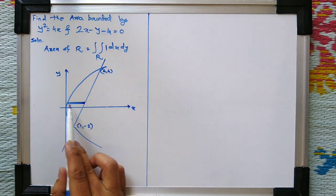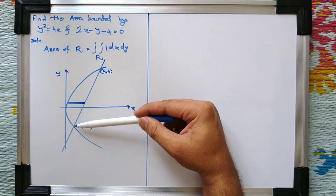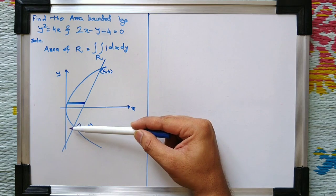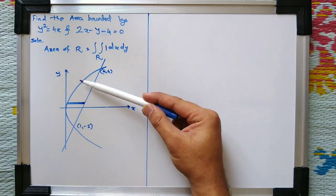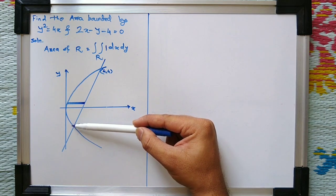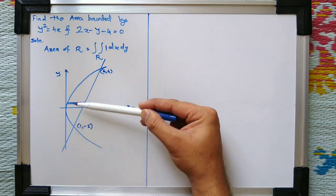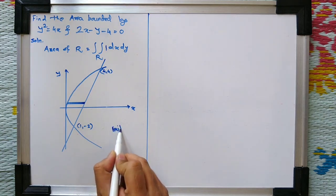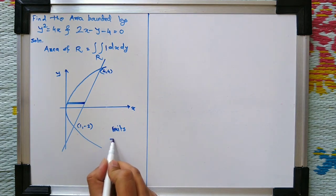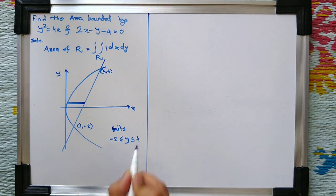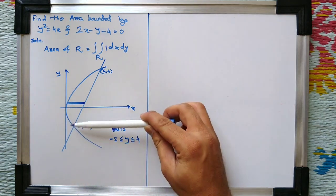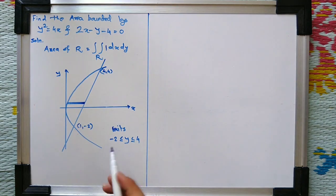To find the limits, we take a horizontal strip and move it from bottom to top so that it covers the whole region R. This strip starts from the bottom point and moves upward. It starts from y = −2 and moves up to y = 4. Therefore, y varies from −2 to 4.